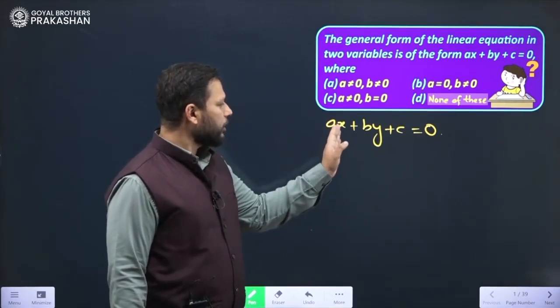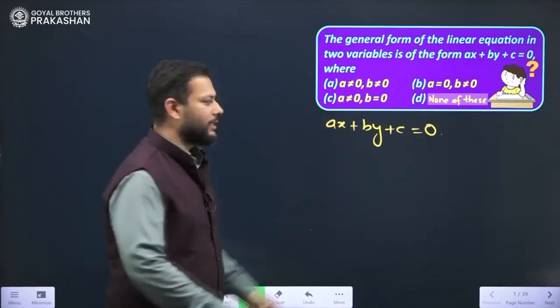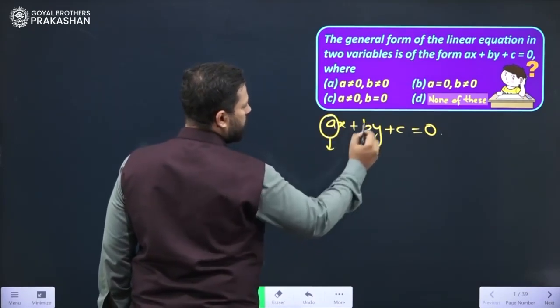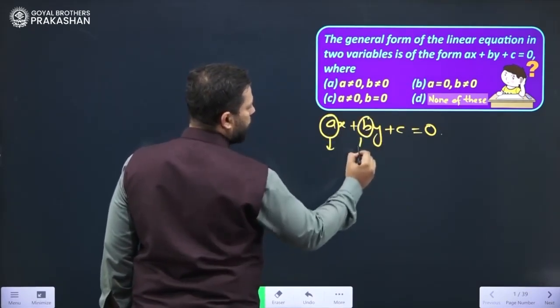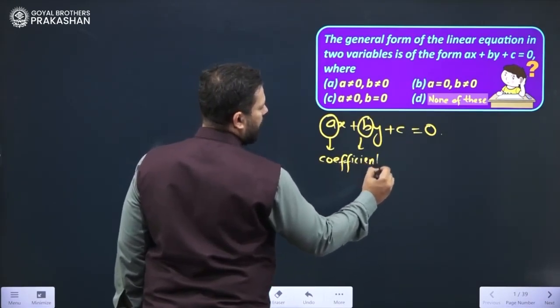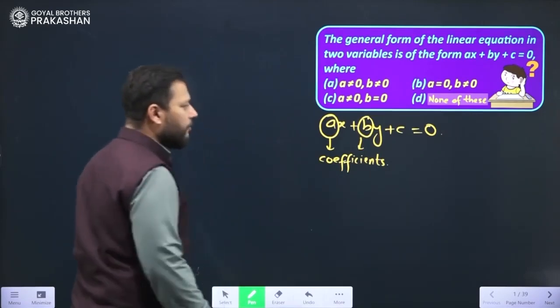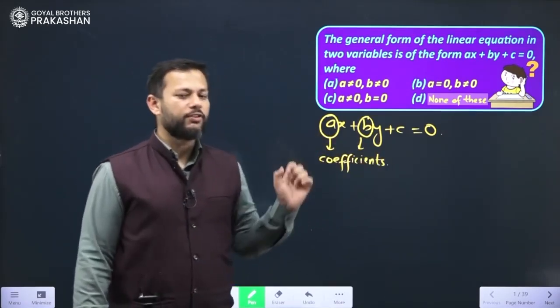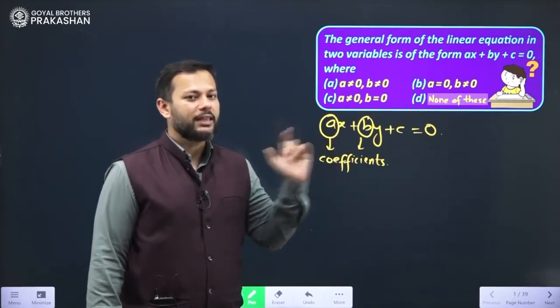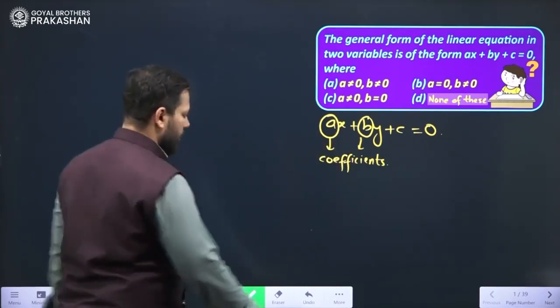Here the coefficient of the first variable x is a. What is this a? This a is its coefficient and b is also its coefficient. These two are the coefficients of the given variables. So if the value of these coefficients becomes 0 somehow, what will be the effect in the given equation? Let us try to understand it.